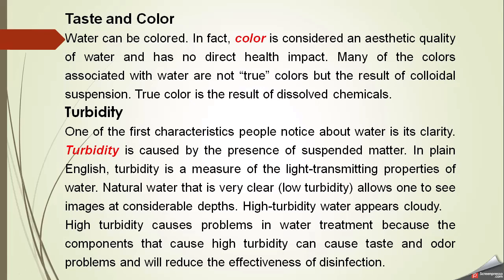Turbidity is a measure of the light-transmitting properties of water — how much light passes through and how much is stopped. If more light passes, water is less turbid; if more light is stopped, it is more turbid. This is due to suspended or colloidal matter, not dissolved substances. Natural clear water allows one to see images at considerable depths, while high-turbidity water appears cloudy and requires treatment.